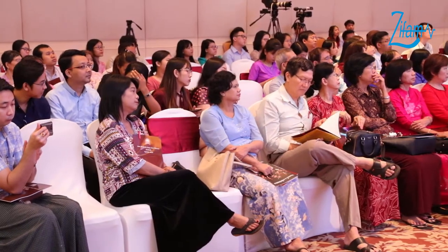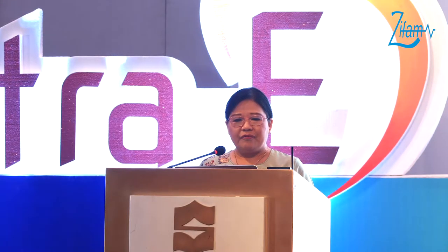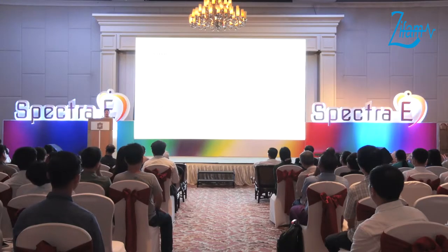NAFLD is histologically divided into two subtypes: NAFL (non-alcoholic fatty liver) and NASH (non-alcoholic steatohepatitis). NAFL means the presence of at least five percent hepatic steatosis without evidence of hepatocellular injury in the form of hepatocyte ballooning. NASH means the presence of at least five percent hepatic steatosis and inflammation with hepatocyte injury — ballooning — with or without fibrosis. Advanced fibrosis is defined as stage three and four, meaning bridging fibrosis or cirrhosis.